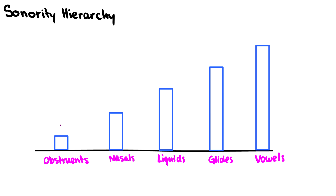Obstruents have a sonority ranking of 1. Nasals are one more sonorous at 2, liquids at 3, glides at 4, and vowels at 5. This is a good chart for quite a few languages in the world. So obstruents are the least sonorous and vowels are the most sonorous.